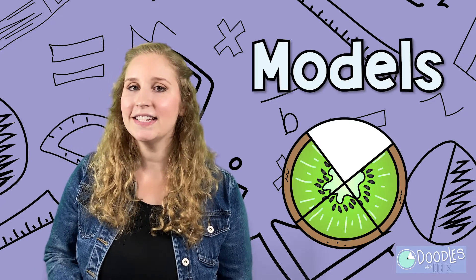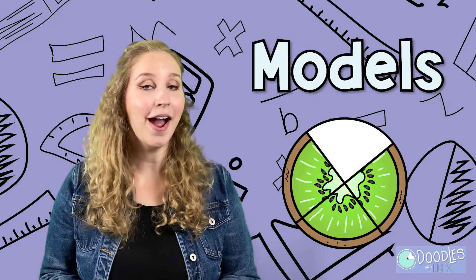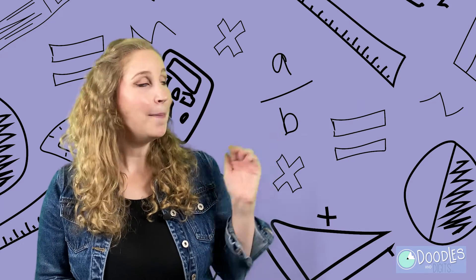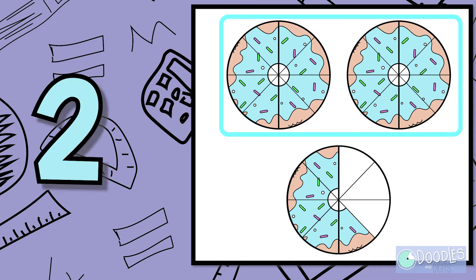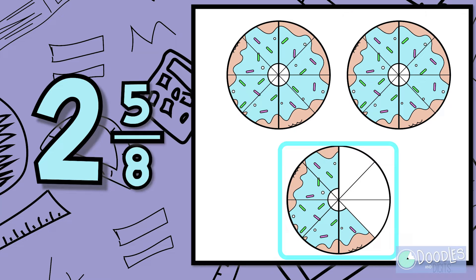There's actually a couple different ways that you can show a mixed number. Let's look at a couple models and see if you can figure out what mixed number I'm showing. Alright, what mixed number is this? There are two whole donuts here and then when we look at the fraction, there's five out of the eight pieces left over. So our mixed number is two and five eighths.